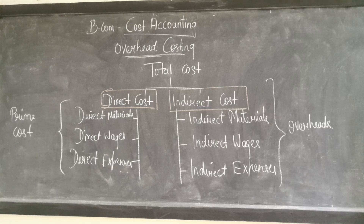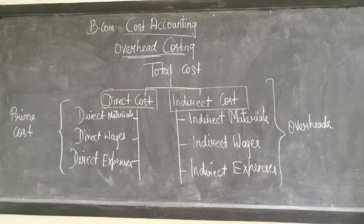When we come to indirect costs, we have indirect materials, indirect wages, and indirect expenses. When we add all these indirect materials, indirect wages, and indirect expenses together, that is known as overhead.